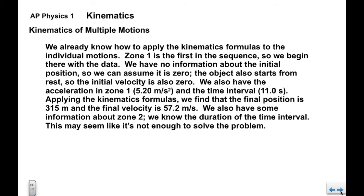Now again, we already know how to apply the kinematics formulas to the individual motions. Zone 1 is the first, and we have the most data there. We don't have any information about the initial position, so once again we can assume that that's zero. It starts from rest, the initial velocity is zero, we have the acceleration, and we have the time interval. So we apply the kinematics formulas. We'll find that the final position is 315 meters, and the final velocity is 57.2 meters per second. We're going to leave out the kinematics for the sake of brevity.